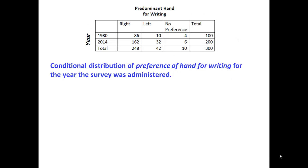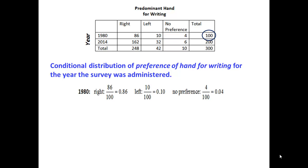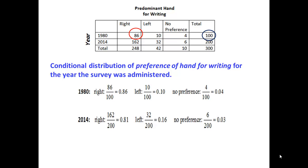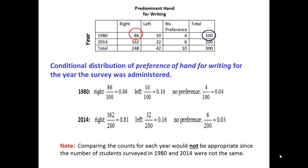The conditional distributions of preference of hand for writing for the year the survey was administered: since we are interested in the distribution of hand preference for a given year, to calculate the proportion of right-handed preferences given that the year is 1980, we restrict our attention to the 100 survey respondents in that year. Of the 100 students surveyed, 86 reported using the right hand for writing. Note: when comparing the counts for each year, it would not be appropriate to use counts since the number of students surveyed in 1980 and 2014 were not the same. Instead, we use proportions or percents.